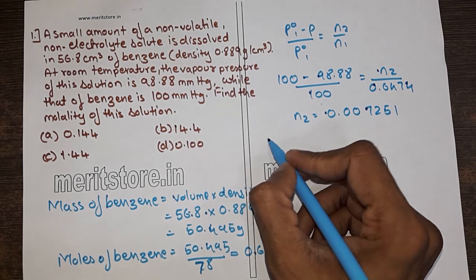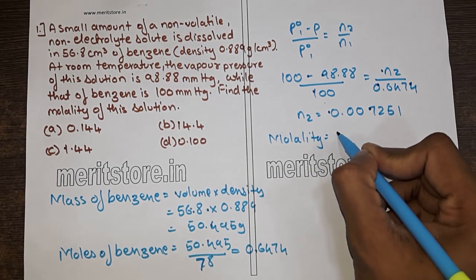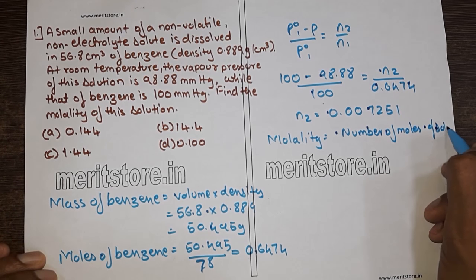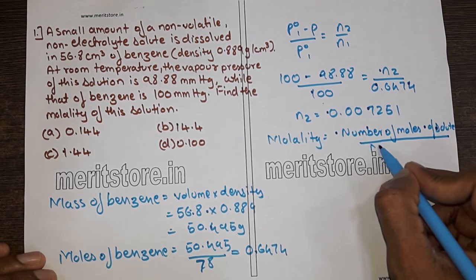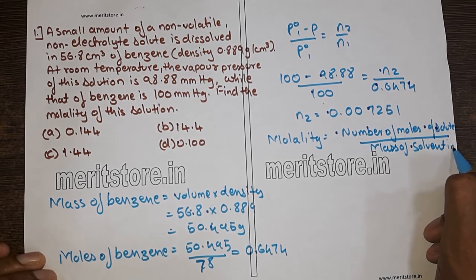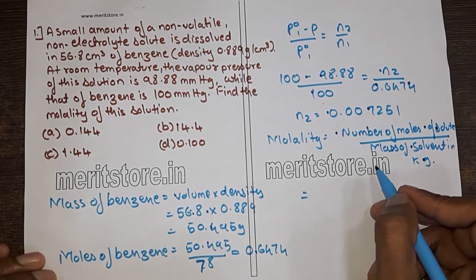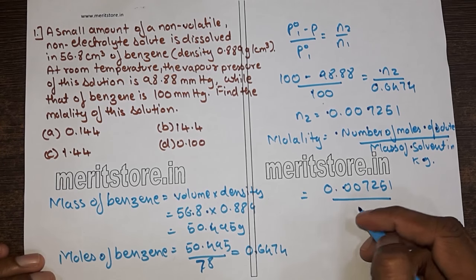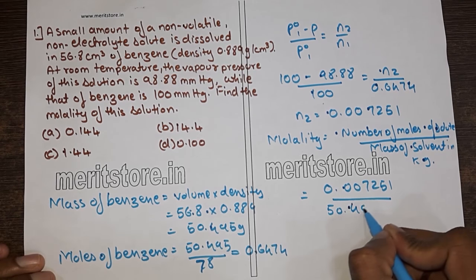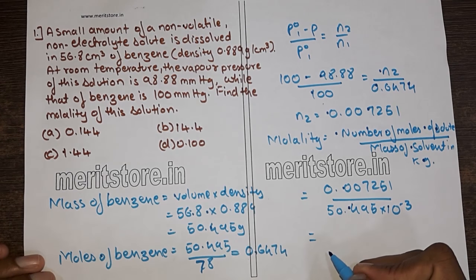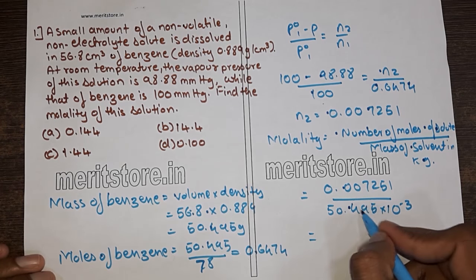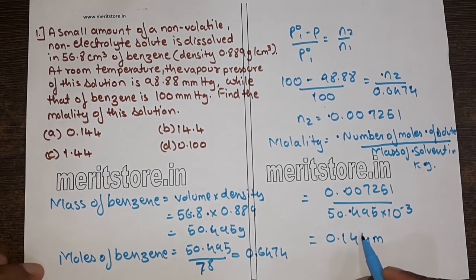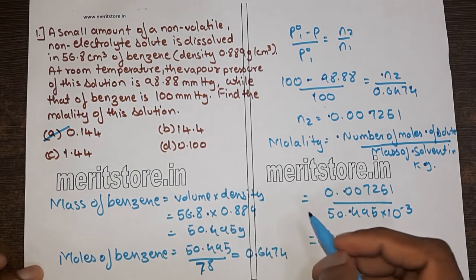So we find the molality: molality = moles of solute / mass of solvent in kg = 0.007251 / (50.495 × 10⁻³) = 0.144. Therefore our answer matches with option A, that is 0.144. Option A is the correct answer.